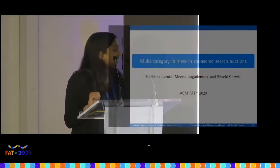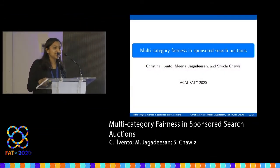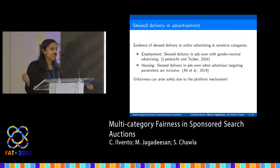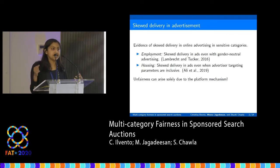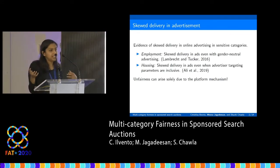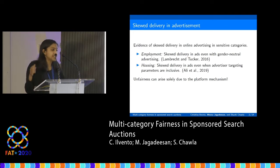I'm going to talk about multi-category fairness in sponsored search auctions. This was joint work with Christina Elvento and Shu Chichella. Like the previous talk, I'm going to be talking about skewed delivery in online advertisement and how we might solve that. There's been empirical evidence of people from different racial and gender groups seeing differing amounts of ads in sensitive categories like employment and housing.